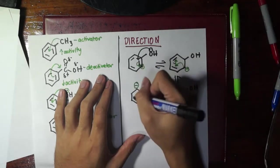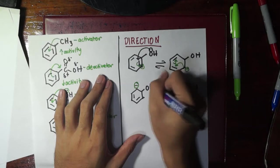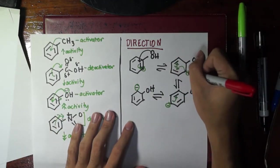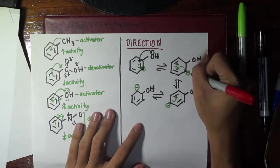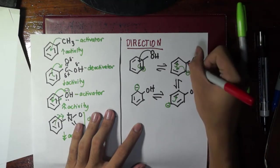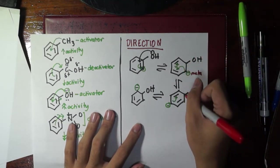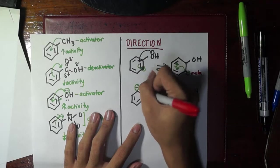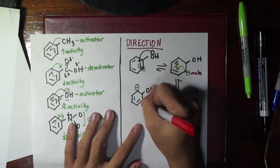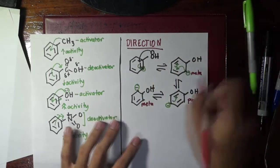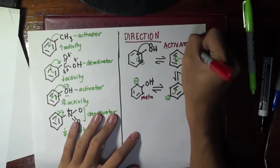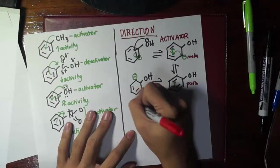And then the double bonds will rearrange again. Look at this. Here the position of the negative charge is meta, right? Because one, two. How about here? One, this is four, this is para. And this one, this is also one, two, meta.